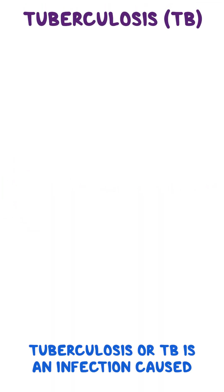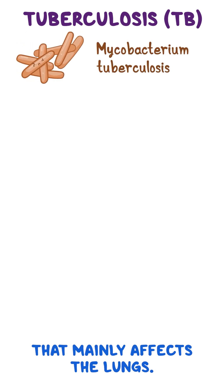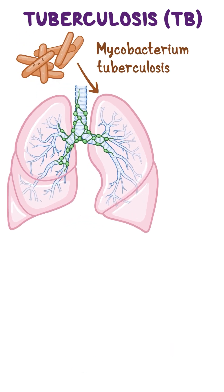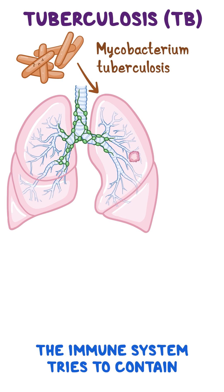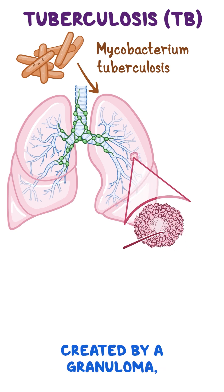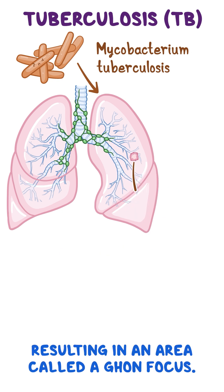Tuberculosis, or TB, is an infection caused by Mycobacterium tuberculosis that mainly affects the lungs. Three weeks after the primary infection, the immune system tries to contain the infection by creating a granuloma, and the tissue in the middle undergoes caseous necrosis, resulting in an area called a Ghon focus.